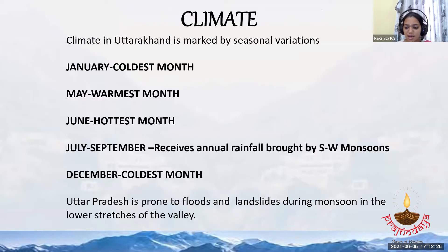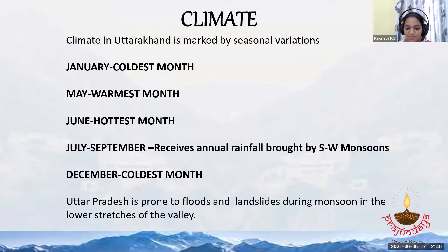Coming to the climate, January is the coldest month and May is the warmest month, with June being the hottest. From July to September, it receives annual rainfall from the southwest monsoon. December is also among the coldest months.